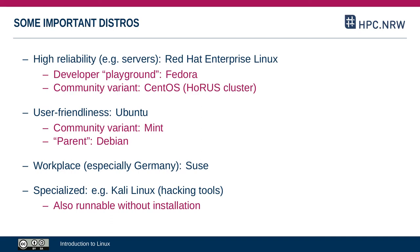Here are a couple of common Linux distributions you might run into. There are many others, but these are the most popular ones. Most have a specific purpose and are geared towards it. A Linux distribution you'll often see for servers and compute clusters is Red Hat Enterprise Linux, or a derivation thereof. Red Hat Linux is distributed by a company also called Red Hat, and it is geared towards high reliability.